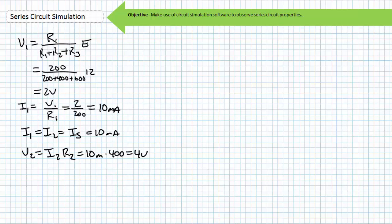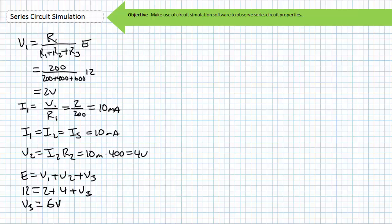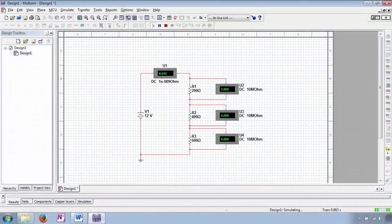Finally, we can use our understanding of Kirchhoff's voltage law to solve for the voltage drop across R3. A KVL analysis of this circuit suggests our rise of 12 volts is dissipated by the summation of three drops: V1 plus V2 plus V3. Having solved for V1 using the VDR and V2 using series circuit properties and Ohm's law, we can substitute these into our KVL equation to solve for V3, where V3 equals the remaining 6-volt drop. Pressing play on the simulator confirms: the ammeter indicates 10 milliamps, V1 is 2 volts, V2 is 4 volts, and V3 is 6 volts as anticipated.